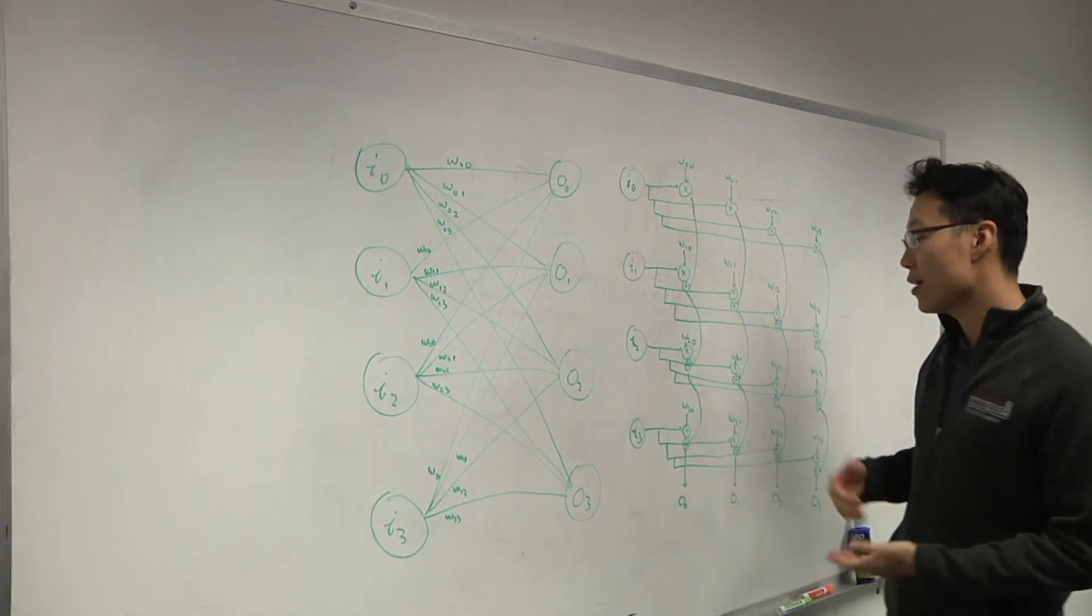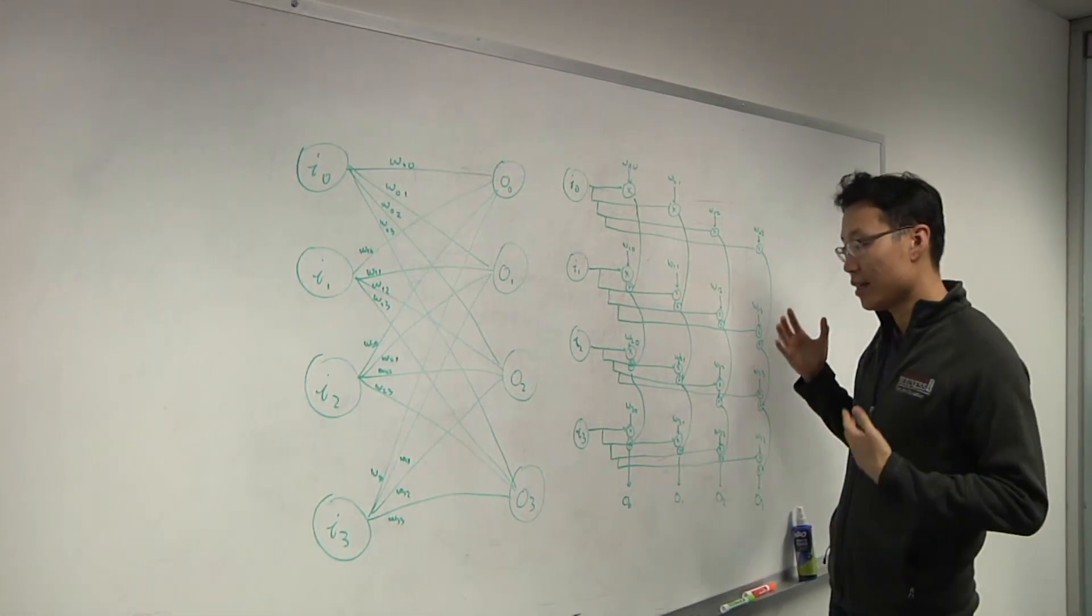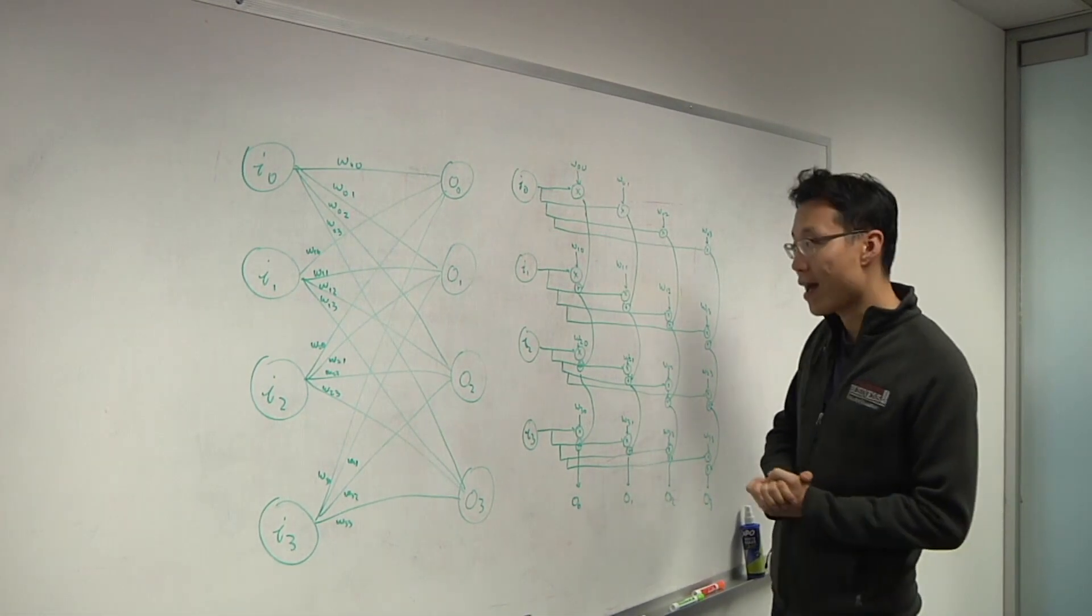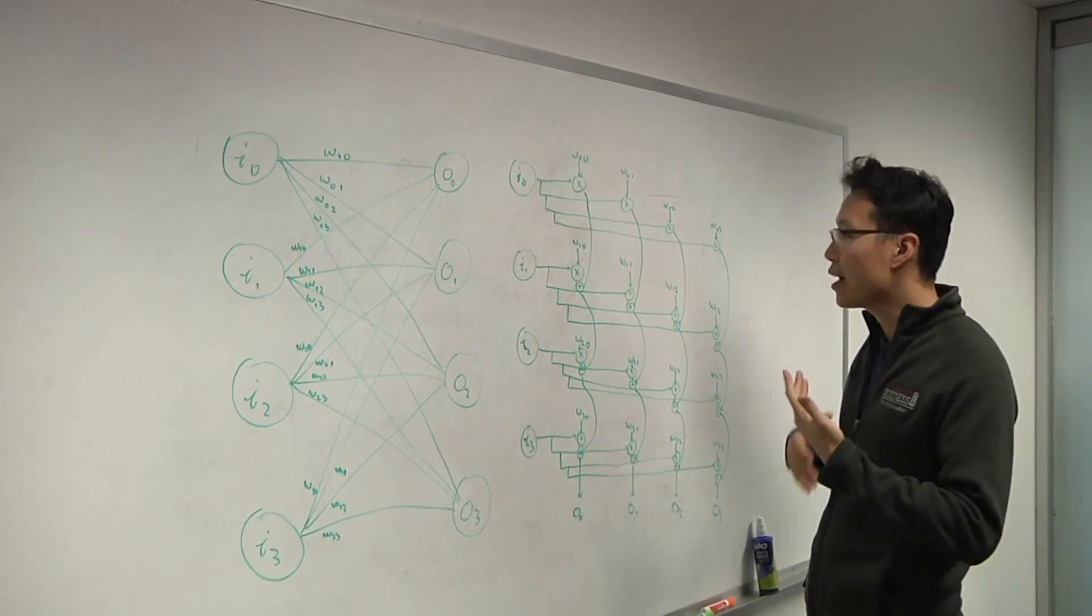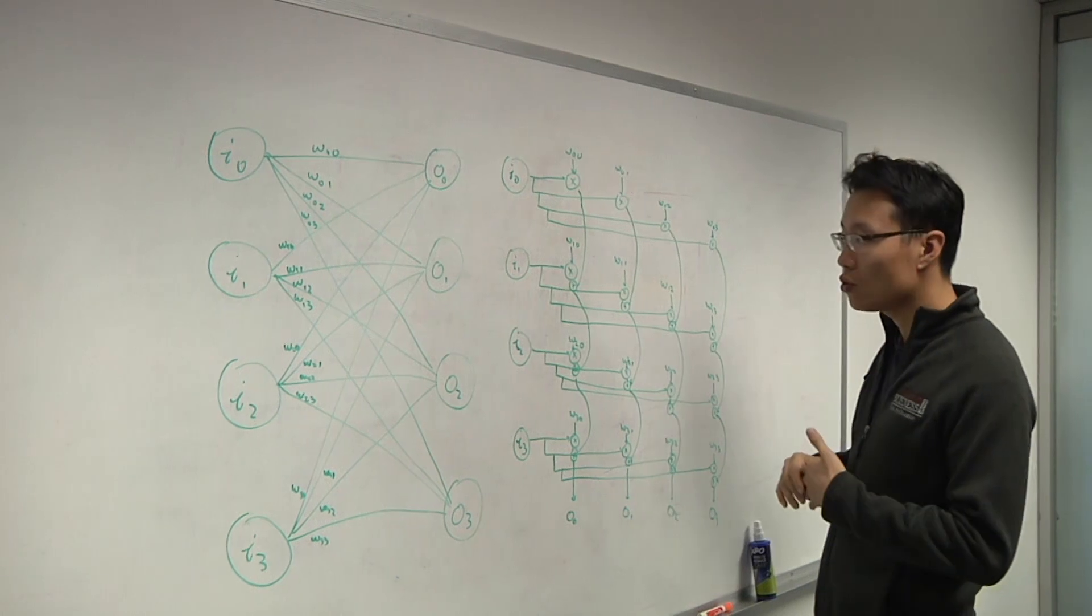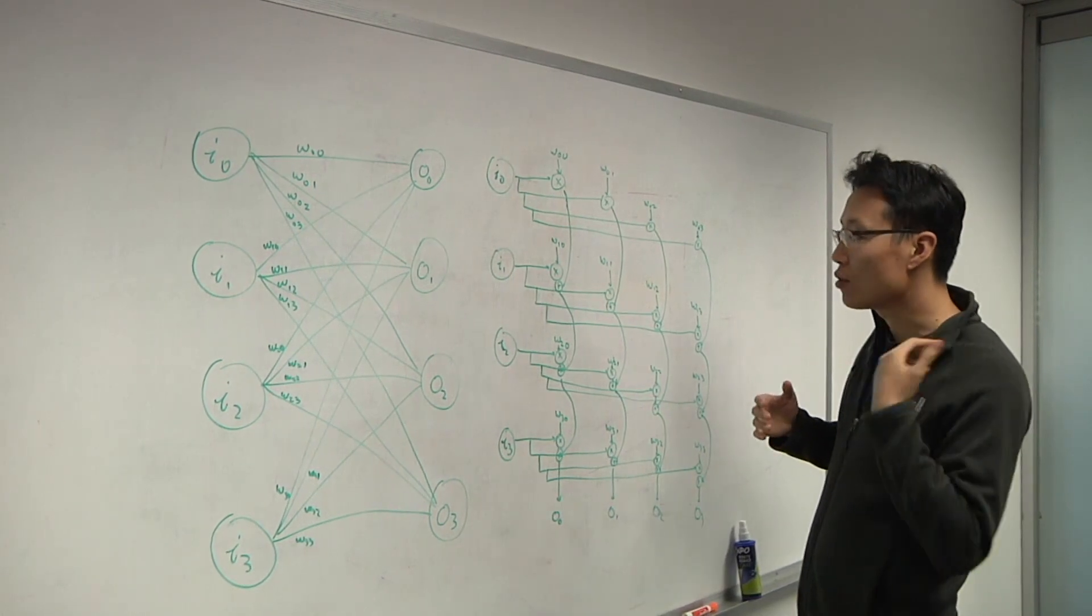So we can draw a MAC multiply accumulate, which we call MAC structure. There are many kinds of MAC structures out there, one-dimensional, two-dimensional, and so on.